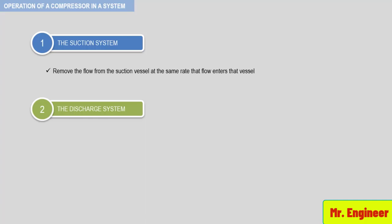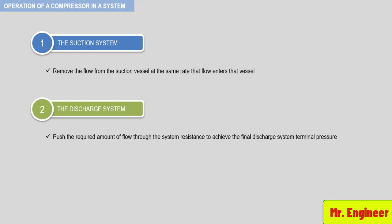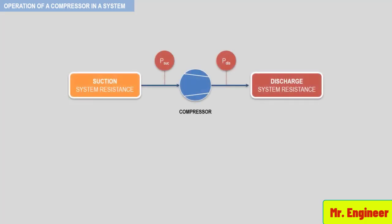In the discharge system, the objective is to push the required amount of flow through the system resistance to achieve the final discharge system terminal pressure. This pressure may be in a vessel, in a ship, or could be in a pipeline. The discharge pressure at the compressor flange is therefore the accumulation of the system resistance from the terminal or delivery point back to the compressor discharge flange. An important point to remember is that the compressor differential head, or energy required by the system, is the net effect of the discharge system resistance and suction system resistance.